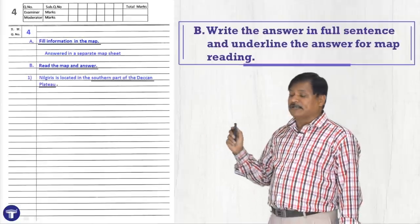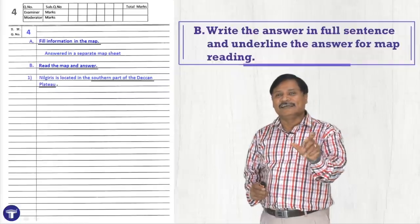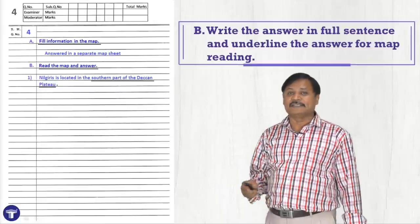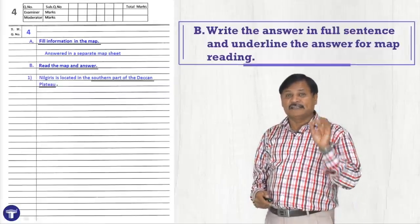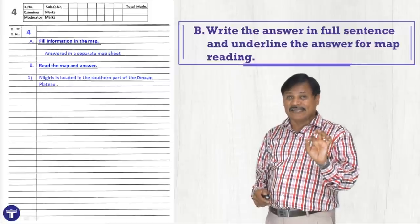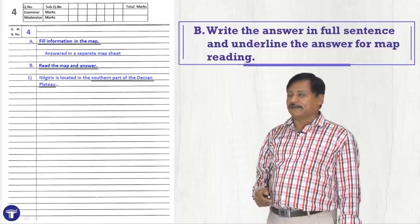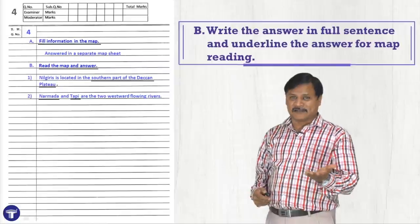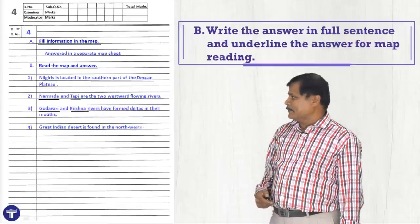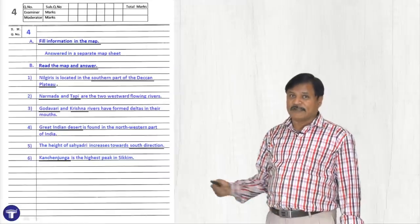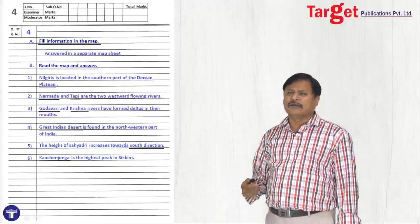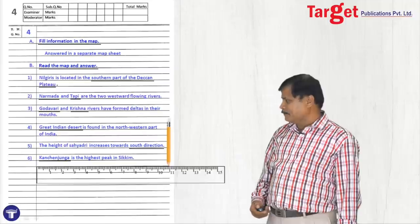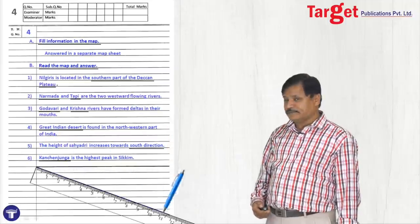Some students write only the answer and lose half a mark. The answer must be written in a full sentence, and please underline the answer. When checking, our eyes will be attracted towards the underlined answer, making it easy for checking. You have to write only four answers, but I attempted all — as I told, here we do not want to take risk, so attempt all. Then draw a line and cancel the page.